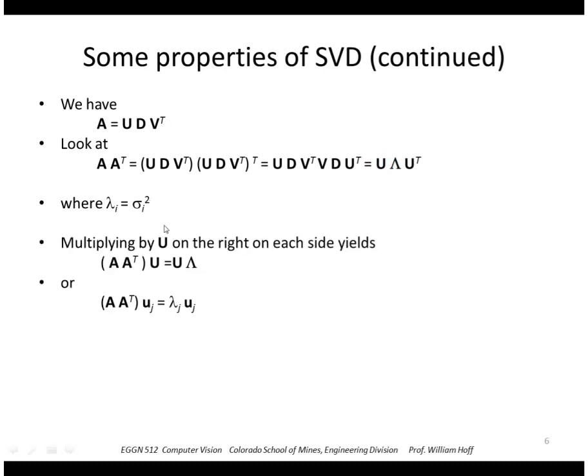Okay, so multiplying U on each side of this, we get this quantity, or this matrix AA^T times each column vector u_j is some λ_j times that same column vector u_j. But that's just the definition of an eigenvalue eigenvector, so that means that these U's are the eigenvectors of the matrix AA^T and the lambdas are the eigenvalues of that matrix.